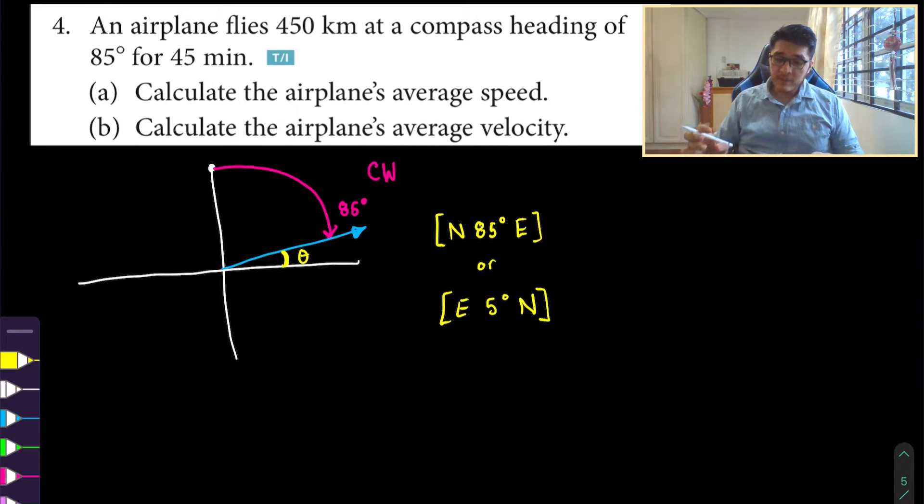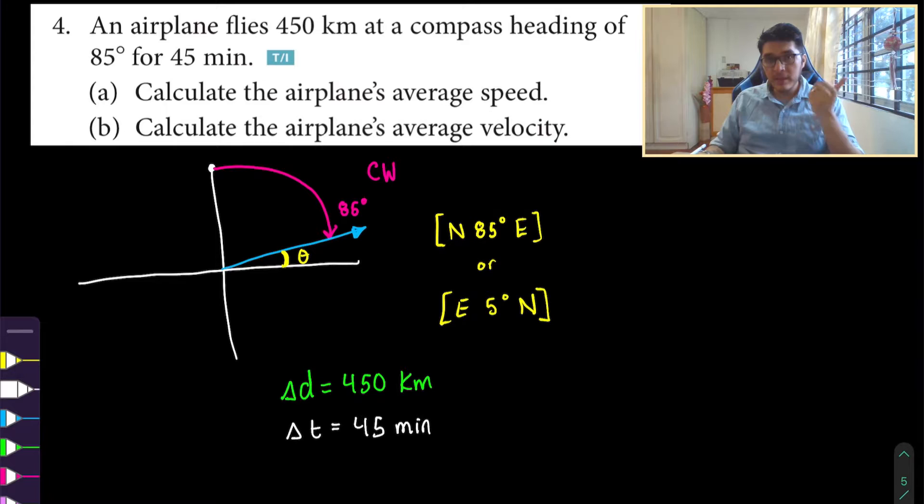Now, the other piece of information they give us is that this airplane's flying 450 kilometers. So our distance travel, which is delta d, is 450 kilometers. And the time interval that it's taking is 45 minutes. Now, one quick thing that we can do is - I haven't answered the question yet, but I'm just showing you how to set up questions.